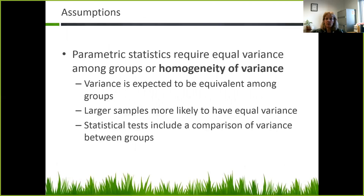When comparing means, you need to keep in mind certain assumptions. Parametric statistics require equal variance among groups — homogeneity of variance — so variance is expected to be equivalent among the groups. Larger samples are more likely to have equal variance. If you have a very small sample size, you can violate that assumption and parametric tests should not be used. The statistical tests include a comparison of variance between the groups.